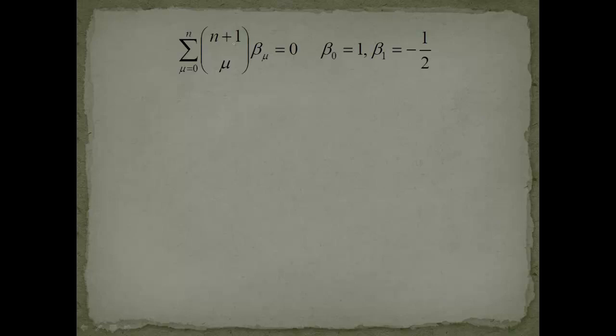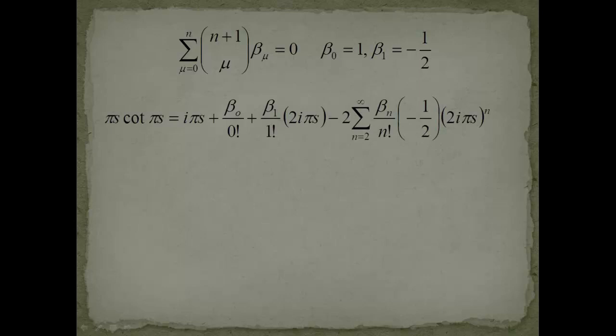Now let's write down what we found out. We found that pi s cotangent pi s could be written as i pi s plus beta 0 over 0 factorial—remember this is defined as 1—then beta 1 over 1 factorial times 2i pi s. If you look at this beta 1 value, it's minus 1/2, so we'll have a minus sign and the 1/2 in this 2 will cancel, so this is minus i pi s.